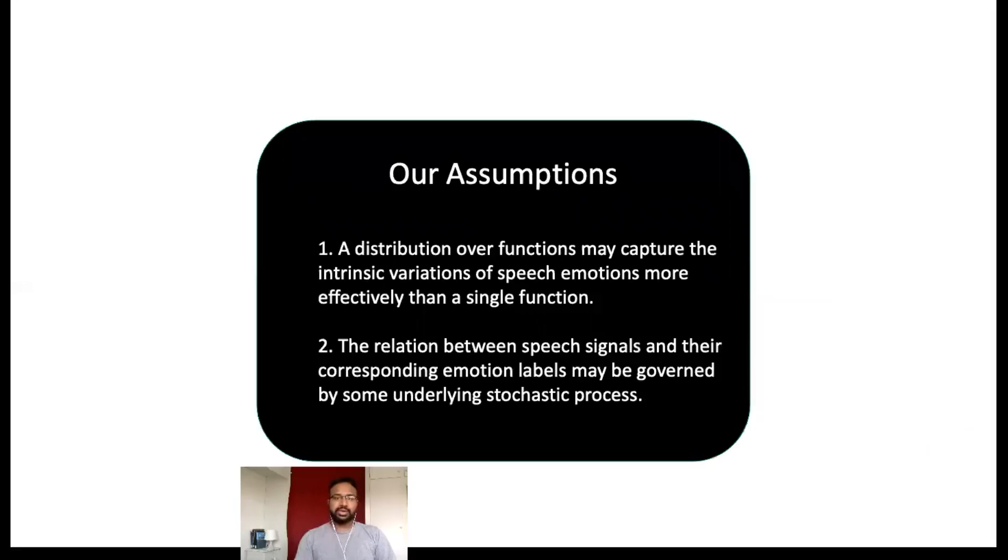In order to cope with these variations, our method makes two assumptions. The first assumption is that a distribution of functions is a more effective solution than a single mapping function in order to cope with this variability. And secondly, the relation between the speech signal and the emotion labels is governed by some unknown underlying stochastic process which we aim to discover from the training data.